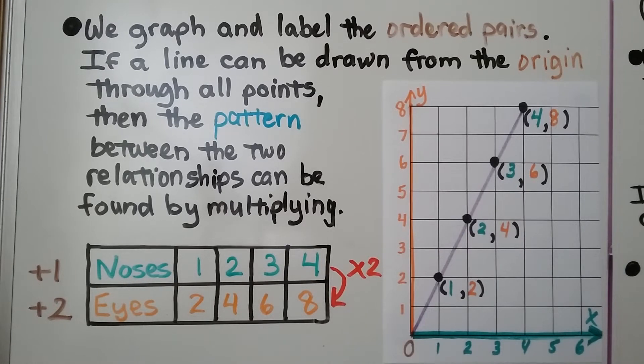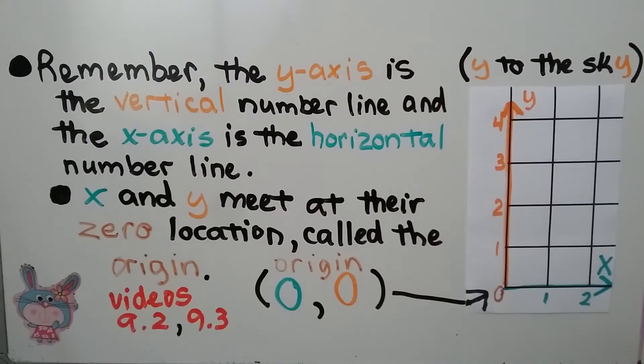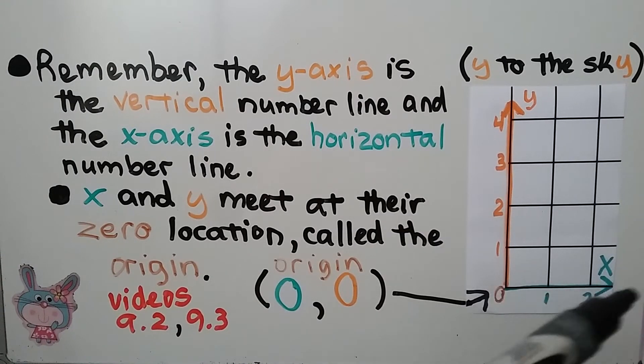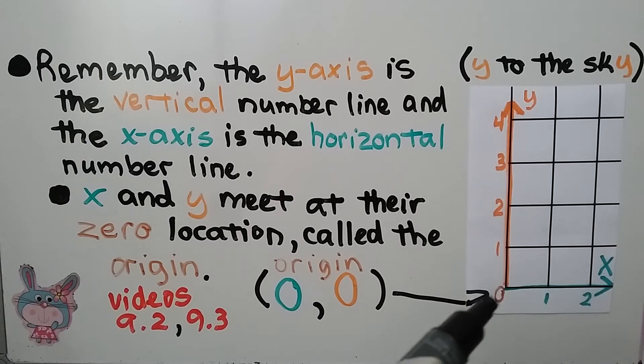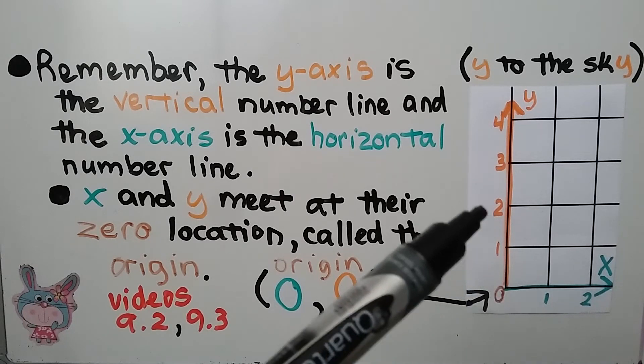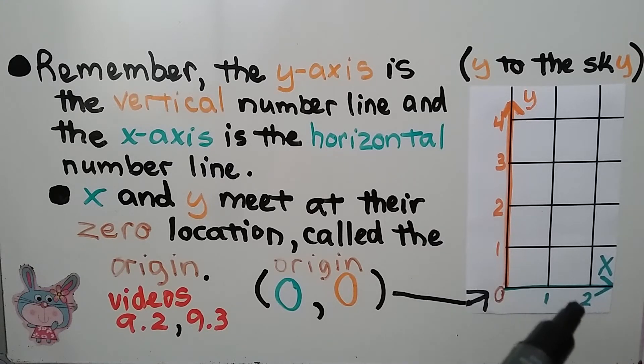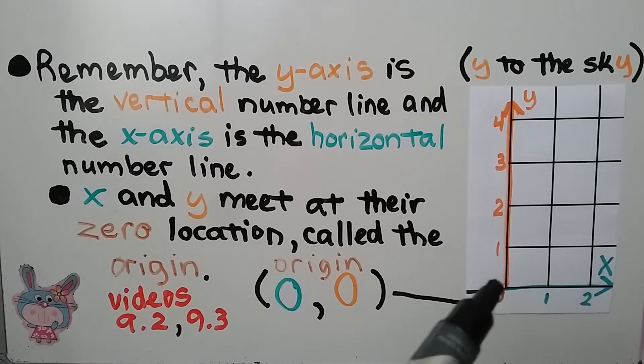We make a straight line. And remember, the y-axis is the vertical number line and the x-axis is the horizontal number line. X and y meet at their zero location. If this is two on y and that's one, then that's zero. If this is two on x and that's one, then that's zero. They meet at their zero location called the origin. It's zero, zero.